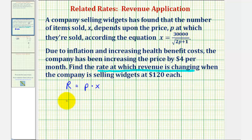So we can write the revenue equation as r of p equals, if we multiply p in this fraction, the p would be in the numerator. So we'd have 30,000p divided by, and now for the denominator, I'm going to write the square root using a rational exponent. So we'll have the quantity 2p plus 1 to the one-half power.